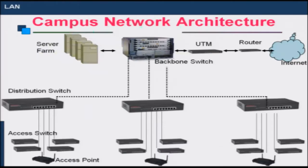So I will briefly talk about the architecture used in different types of networks. In case of a campus network with a few buildings, the architecture we use is called a three-tier architecture. In this architecture, we have a data center where we have application servers, and in this data center we have what is called a backbone switch. All the servers connect to the backbone switch.